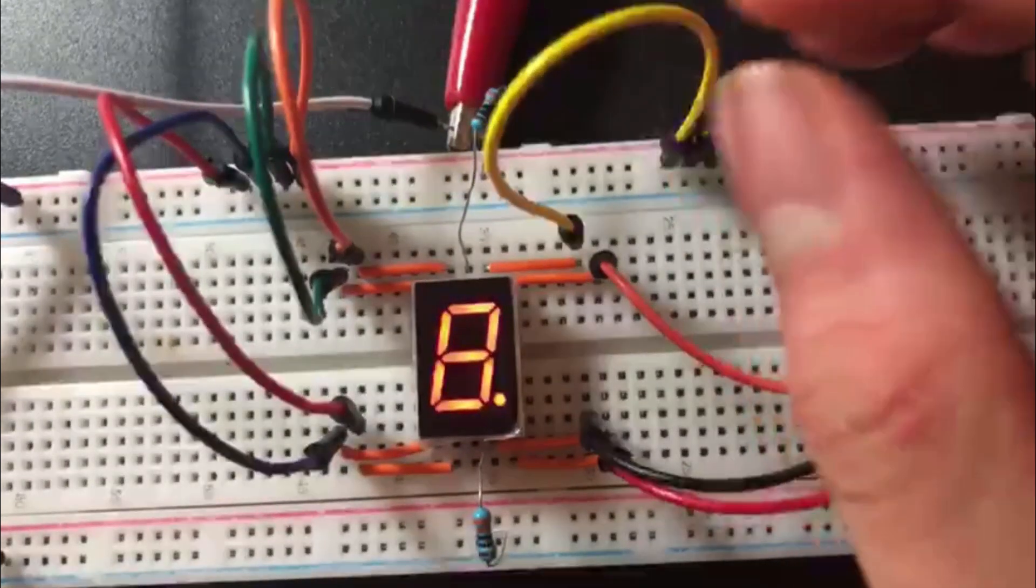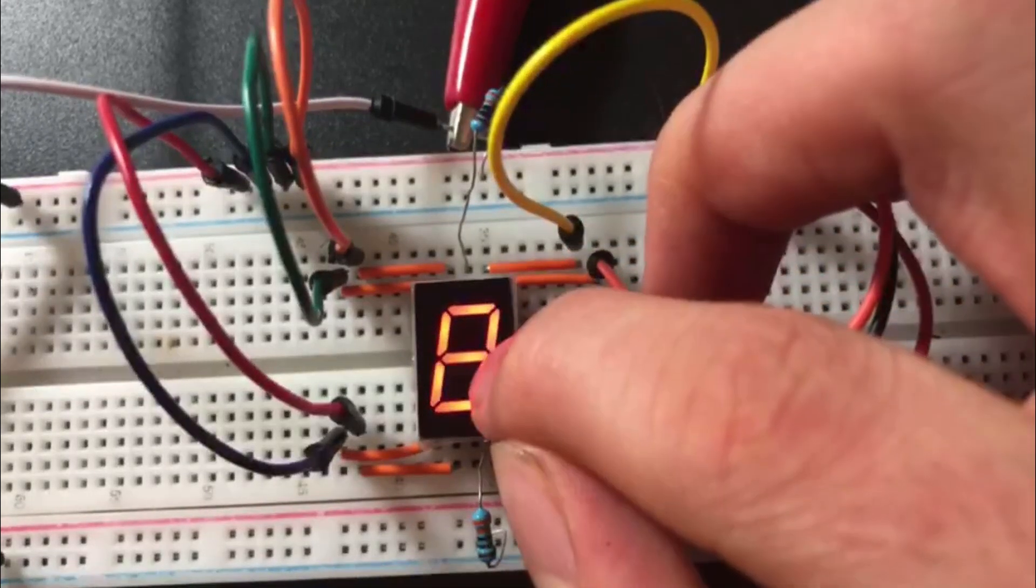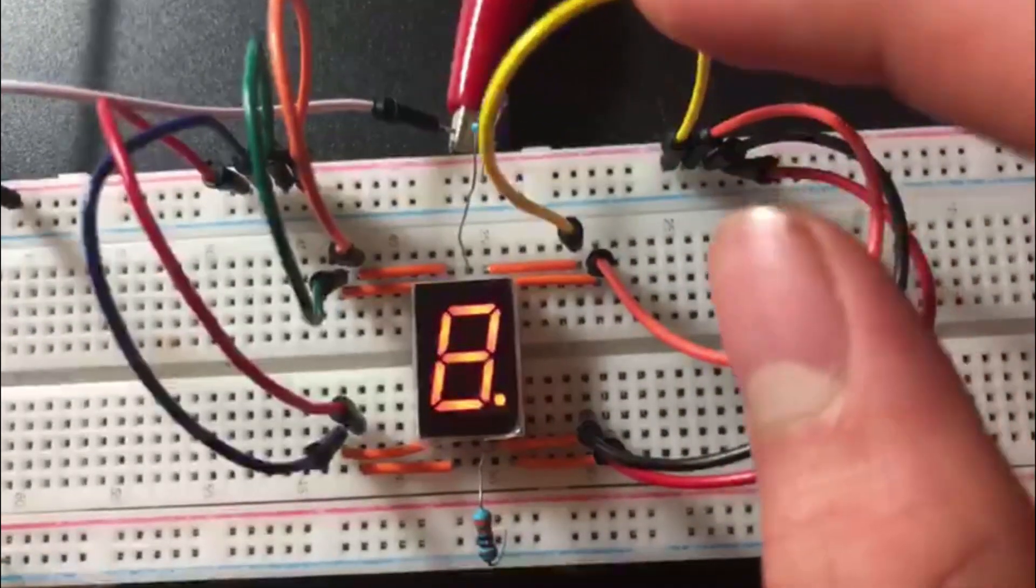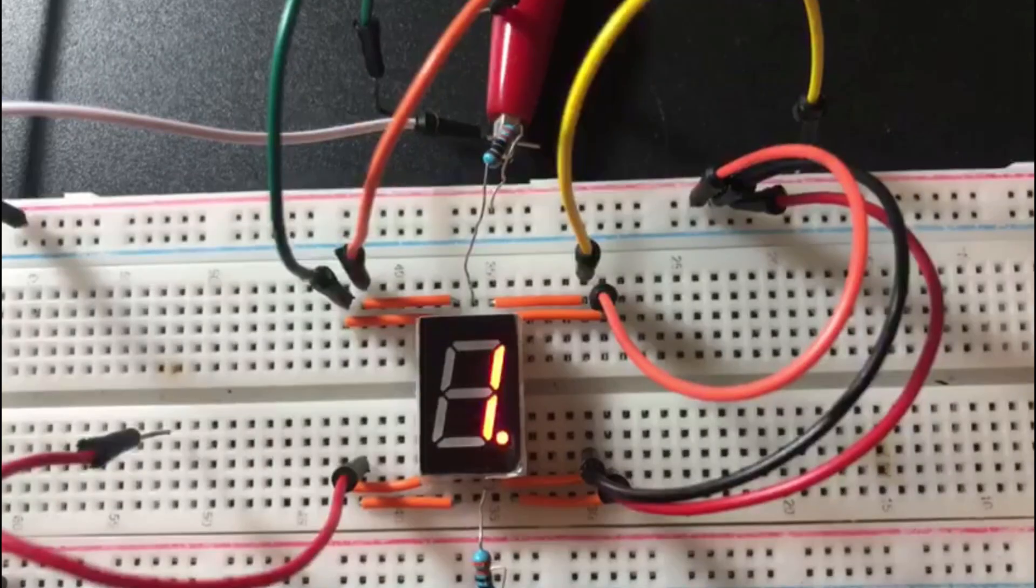So if I'm going to make a one, I'm going to leave B and C on and then the rest of these segments off. And so I just need to find the correct one. And so if I'm going to form a two, I'm going to have my A segment on, 1-2 as well.